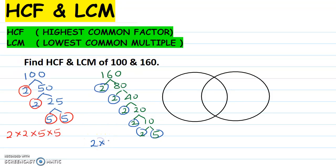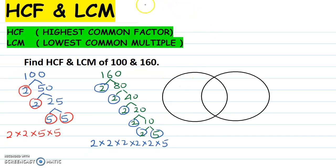How many 2s are there in 160? There are five 2s and one 5. You can see there are two circles here — one circle is for 100 and one circle is for 160.